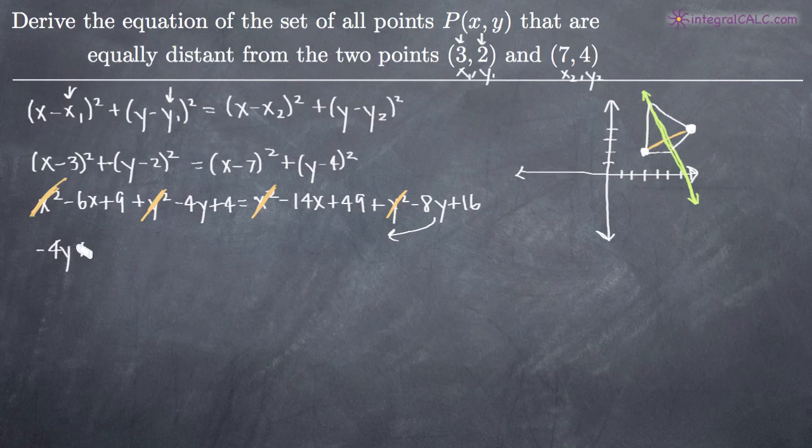So we'll get +8y over on the left and then we'll move everything else to the right. So we've got a -14x. We're going to add 6x to both sides to move this over. So we've got +6x.